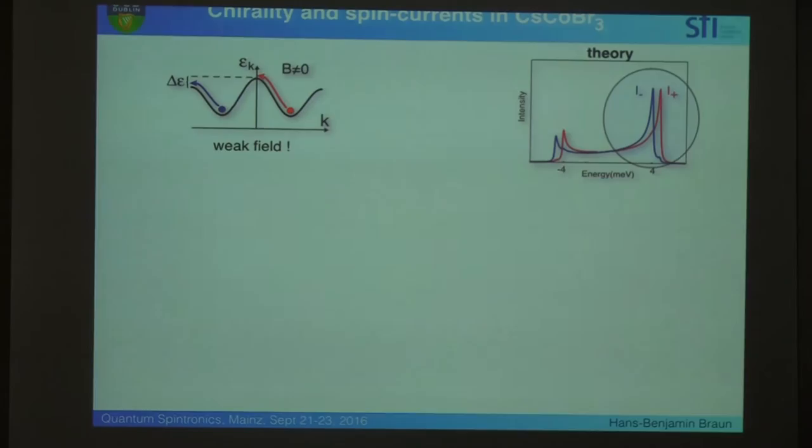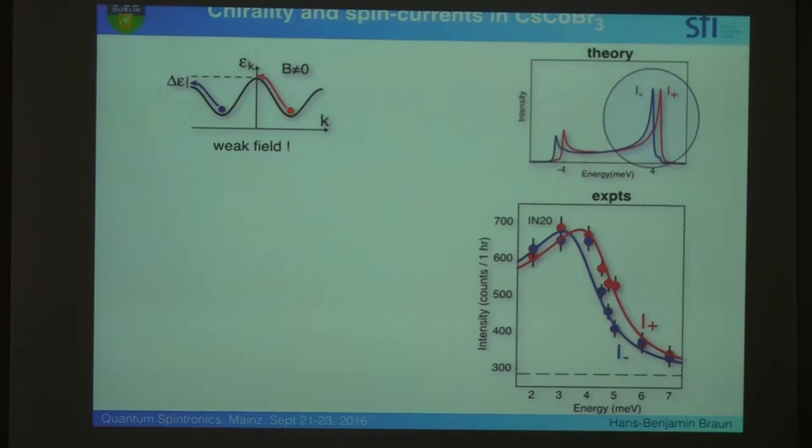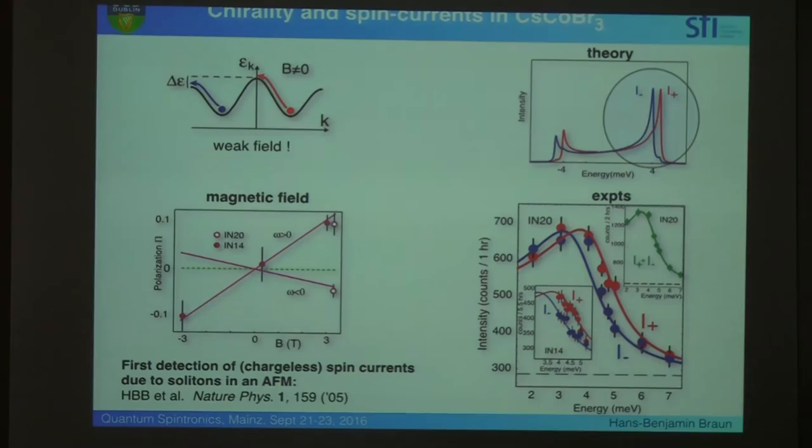And actually, it was a struggle, I mean, several failed magnets, and years have passed. Finally, we were able to see it, but it was really at the limit of statistics, because polarized neutrons, and this is the most intense source. And actually, this constitutes the first detection, really, of a spin current in an antiferromagnet, a pure spin current.